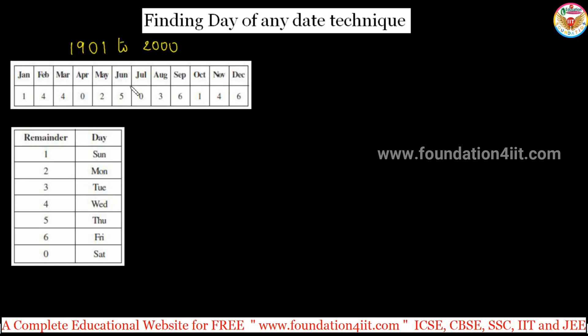Here is the code you are supposed to remember. January to December: 144 025 036 146. You can remember it as 144 is 12 squared, 025 is 5 squared, 036 is 6 squared, then 146 by adding 2 for the first one.